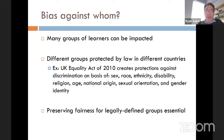When we talk about having data on identity to detect algorithmic bias, it's worth asking — bias against whom? Many groups of learners can be impacted and different groups are protected by law in different countries.